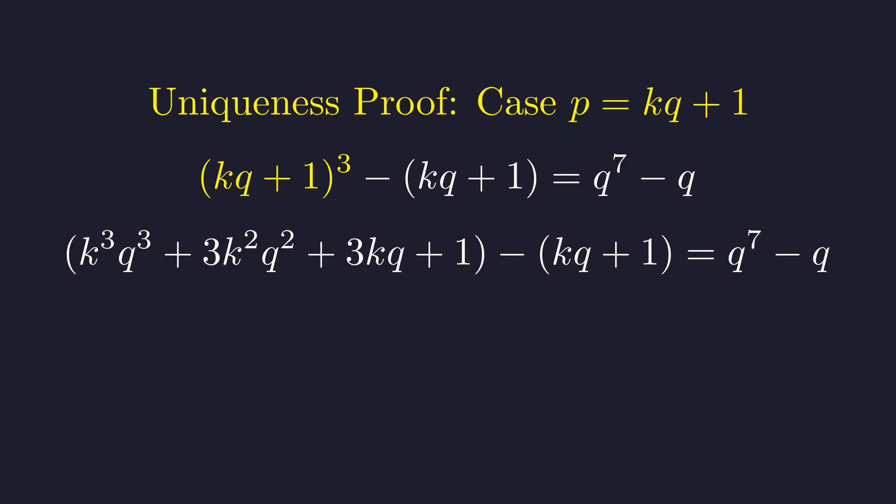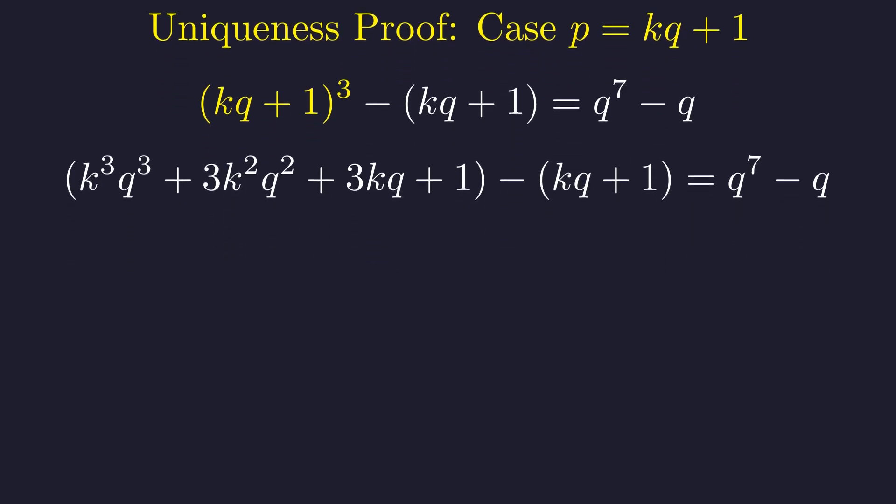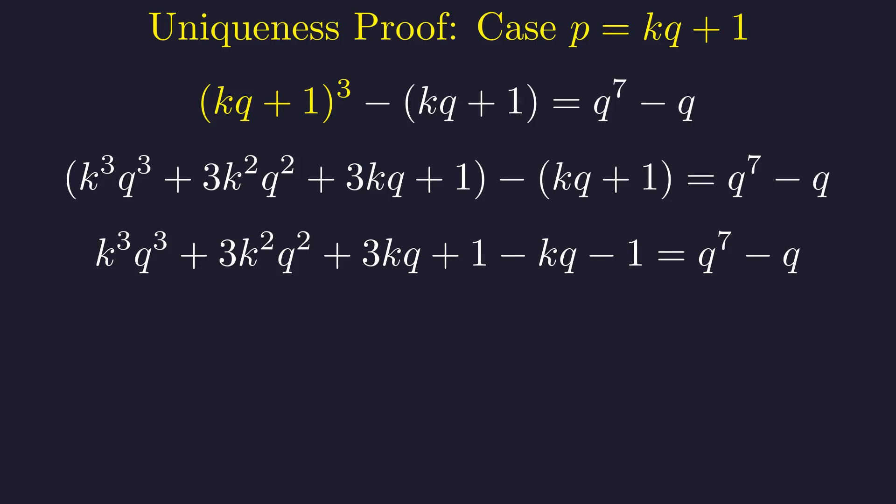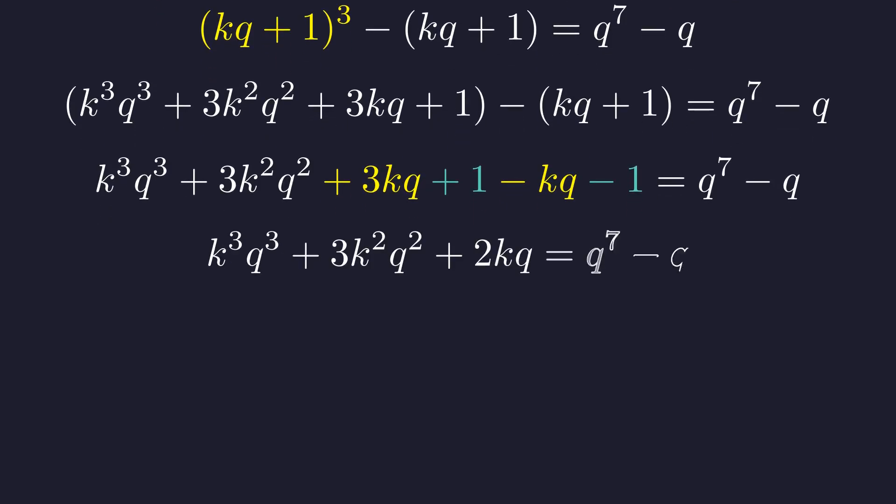First, the cubic term is expanded. Next, we distribute the negative sign across the second term. Now we combine like terms. The terms containing k times q are combined, and the constant terms cancel.